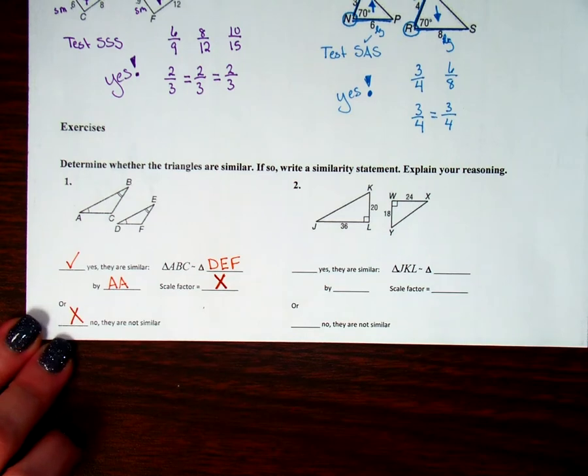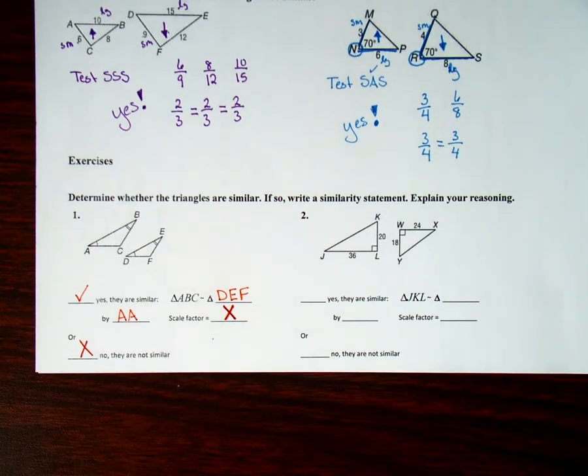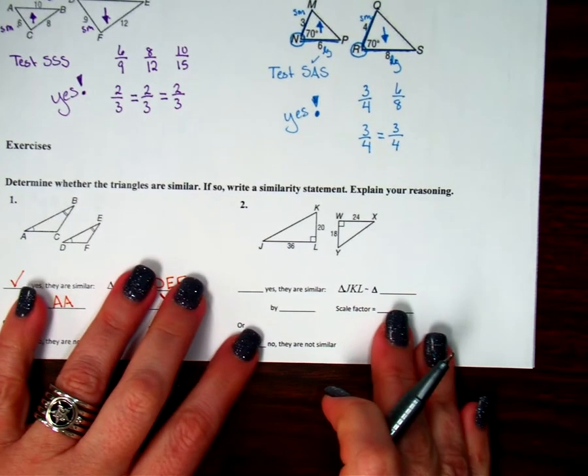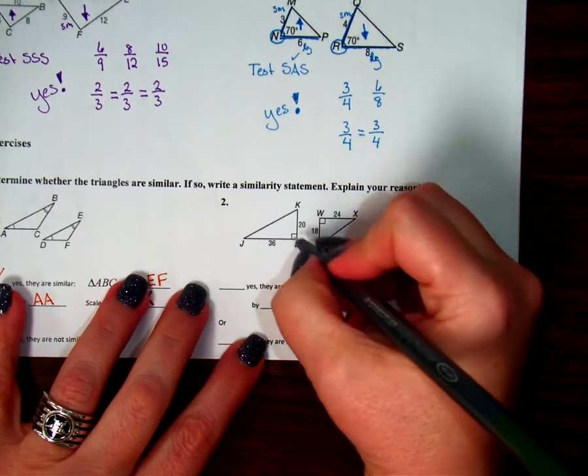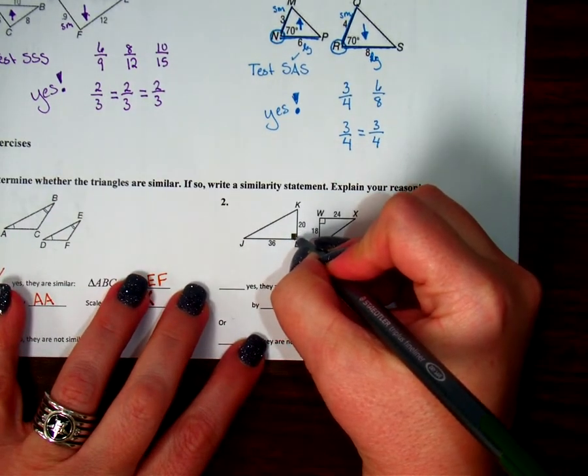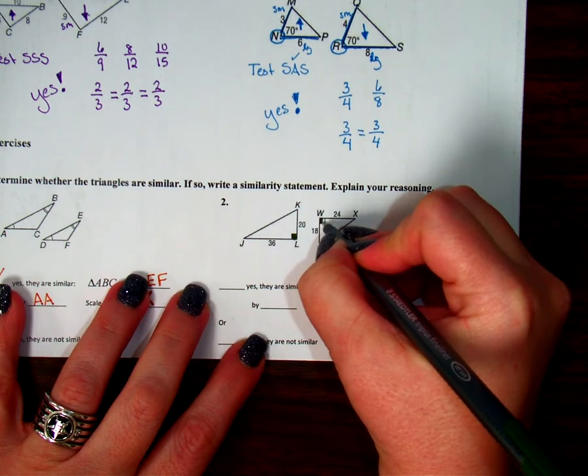Or down here for this blank where it says no they are not similar, well they are similar, right? I said yes, so I could put an X here. Because they are similar, so I'm not going to select no, they are not similar. Let's look at number two. Again, we're going to test to see if the triangles are similar. I only have one angle that I can see. I have a 90 degree angle here, and I have a 90 degree angle here.